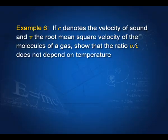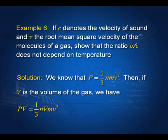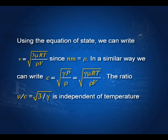Let us take an example. If c denotes the velocity of sound and nu the root mean square velocity of the molecules of a gas, show that the ratio v by c does not depend on temperature. We know that P equals one-third nm v squared from kinetic theory, and using pV equal to RT and nm equal to rho, we get v equal to the square root of 3 mu RT by rho V.